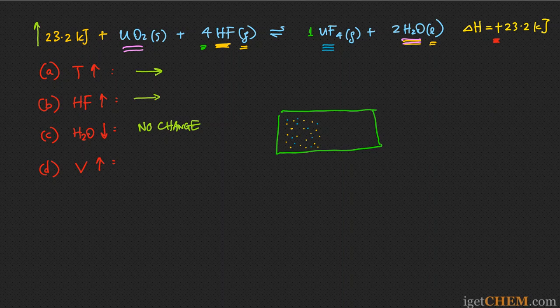So if the system shifts to the left, it would produce a larger number of gas molecules — 4HF on the left versus only 1 UF₄ on the right. That would be more effective in filling up the extra volume. Therefore, increasing the volume causes the equilibrium to shift to the left.